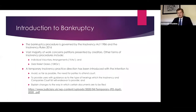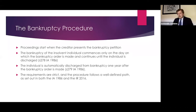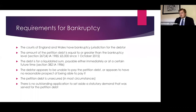The process of bankruptcy is extremely straightforward. Proceedings begin when the petition is presented. The individual is adjudged bankrupt on the date the order is made and discharged automatically on the first anniversary of the order. Before presenting a petition, a creditor must ensure the requirements of bankruptcy are met. The slides will be uploaded after the speech to the Goldsmith Chambers website.